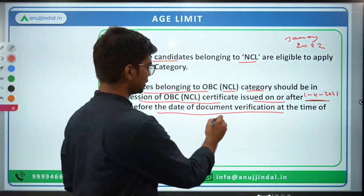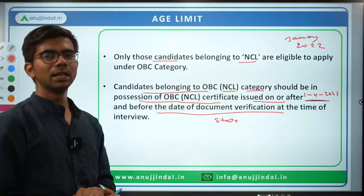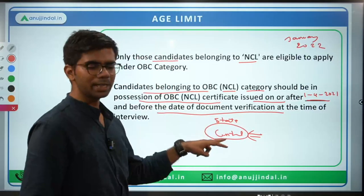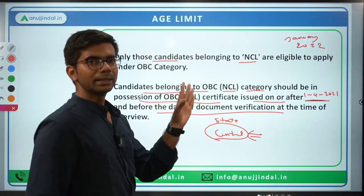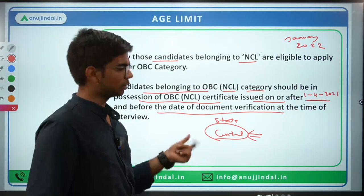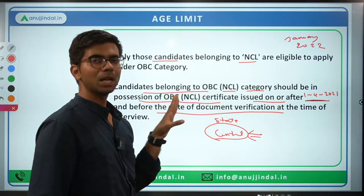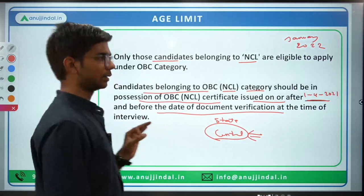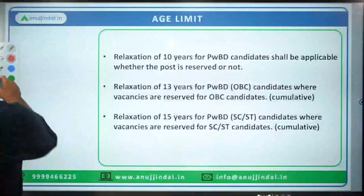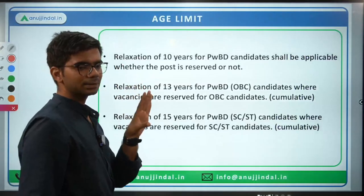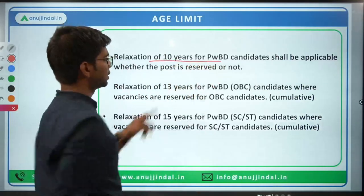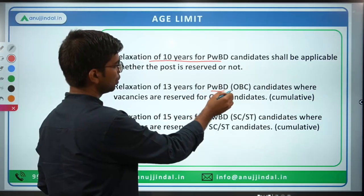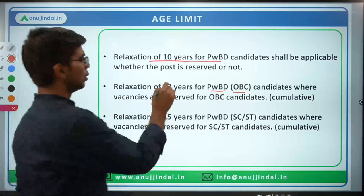An important point: the OBC list is state-wise — each state has its own OBC caste list, and the central government has its own. For SEBI, your caste should be identified in the central list, since SEBI is a centralized body and the central government's certificate format applies. To summarize age relaxations: OBC gets 3 years (age limit 33), SC/ST gets 5 years (age limit 35), and PWBD category gets 10 years relaxation (age limit 40).